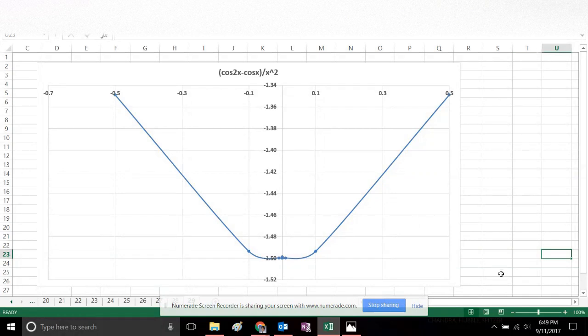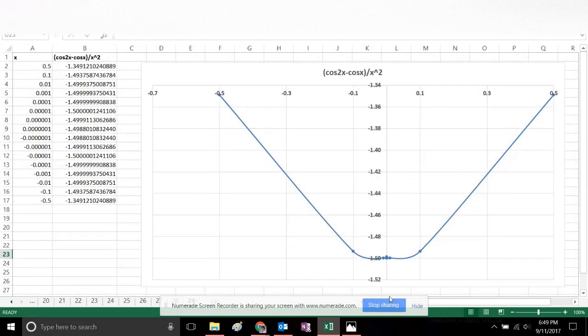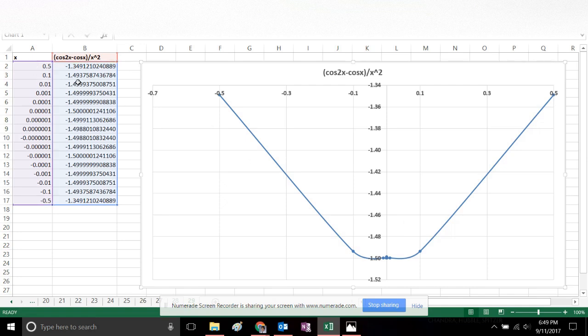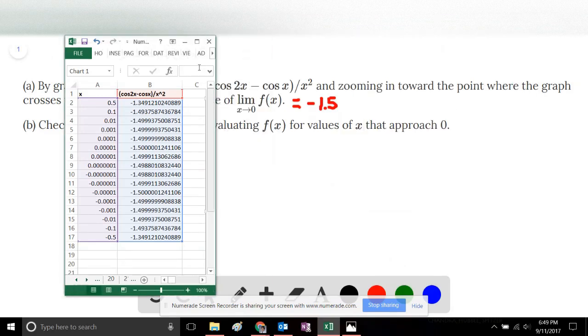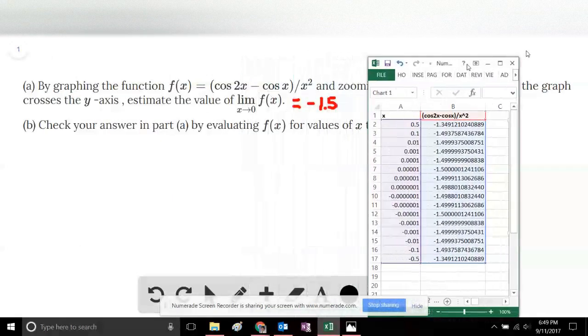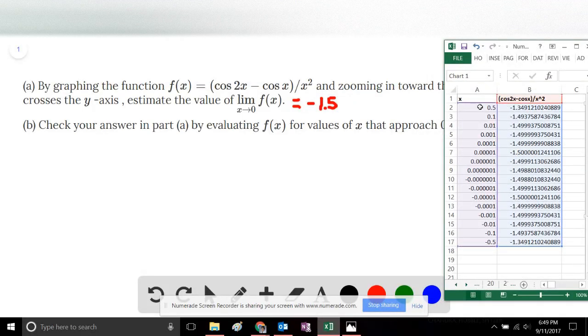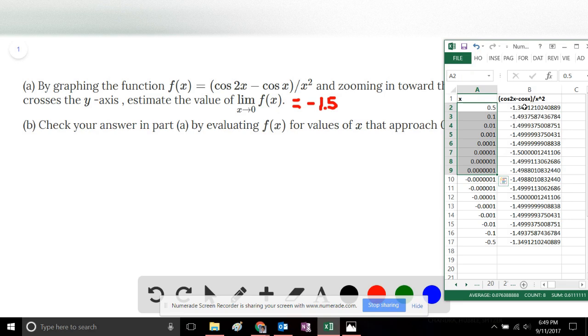And if we go back to the spreadsheet, we see that this plot was actually made using values that were very close to 0. We'll focus specifically on the table of values and show that from the right-hand side, as we get closer and closer to 0 from the right, the values got closer to negative 1.5.